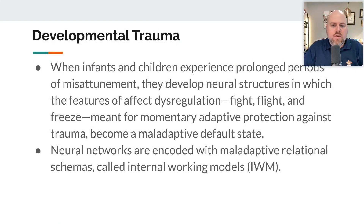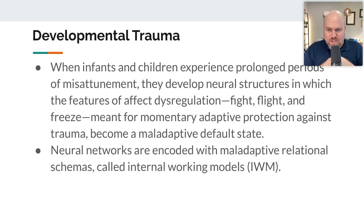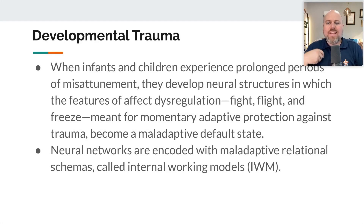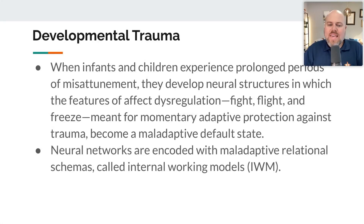One more I want to mention because it often goes unnoticed is developmental trauma. This is trauma that happens very early on during infancy or early childhood, and it's what happens when the infant or child experiences prolonged periods of misattunement — the caregiver is not attuning to them. The infant and child's nervous system is not able to regulate itself; it is dependent upon the attuned nervous system of an external caregiver to help them work through periods of dysregulation.